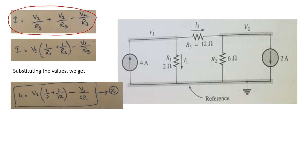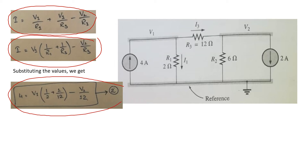Substituting the values of I3 and I1 into equation number 1, you will get I is equal to V1 divided by R1 plus V1 minus V2 divided by R3. Simplifying: I is equal to V1 by R1 plus V1 by R3 minus V2 by R3, which rearranges to I is equal to V1 into (1/R1 plus 1/R3) minus V2 by R3. After substituting the values of R1, R3, and I, you will get 4 is equal to V1 into (1/2 plus 1/12) minus V2 by 12. This is the equation of node 1.